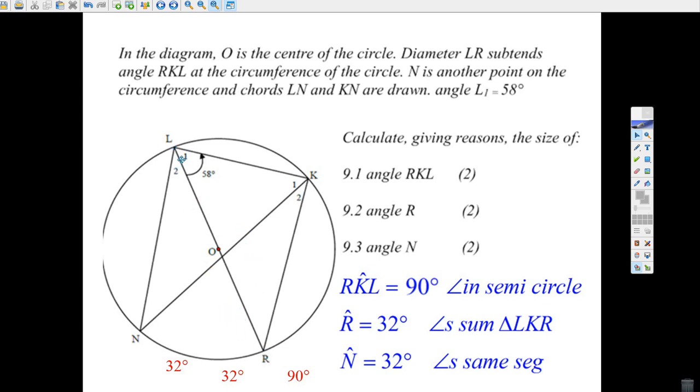Subtends the angle RKL right there. Oh, that gives you a hint, you see. This angle opens up to the diameter. N is another point on the circumference, and R is on the circumference of the circle.